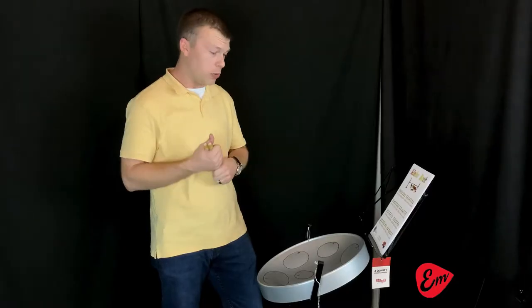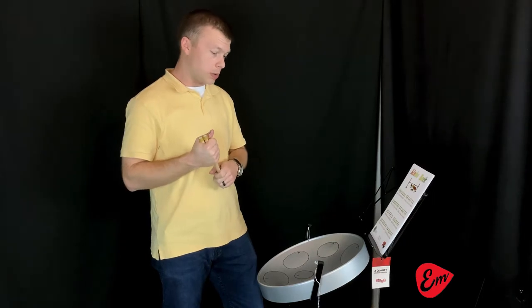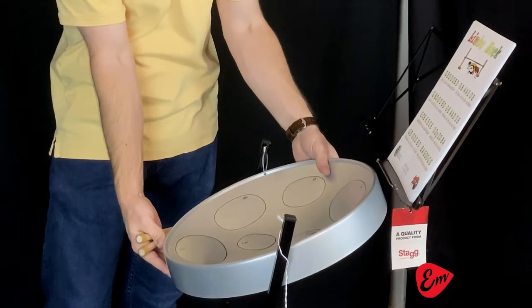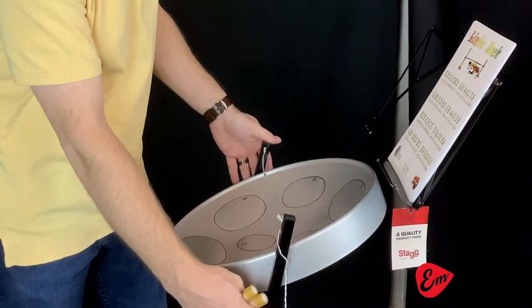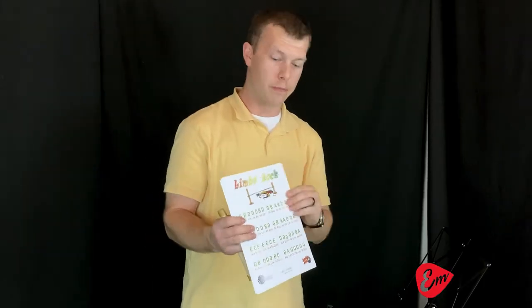They also come in C and in a variety of different colors as well - you can get them in green, blue, or pink. It's very fun to play and very easy as well. It comes complete with the actual pan itself, the Z stand that it's mounted on, and it also comes with a set of sheet music.